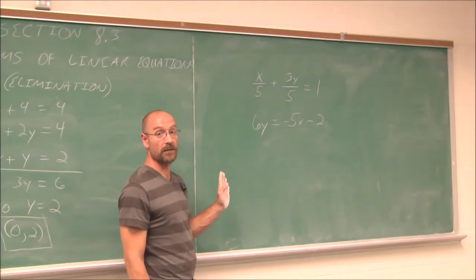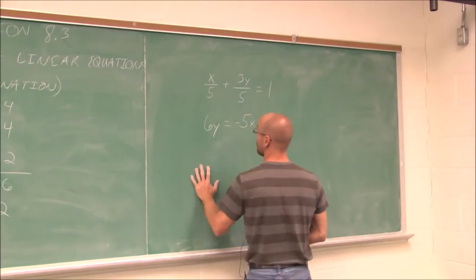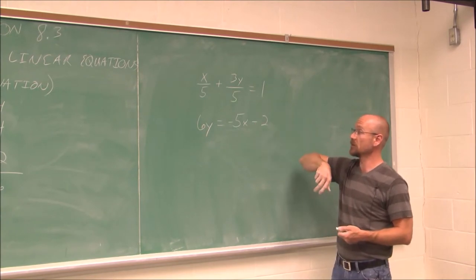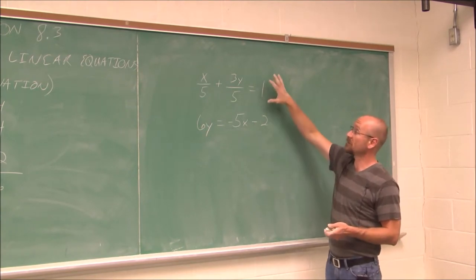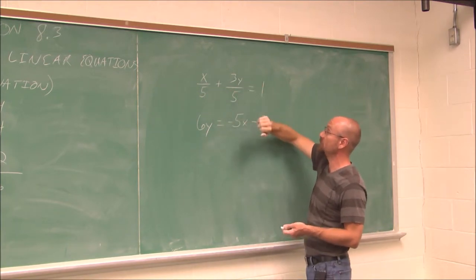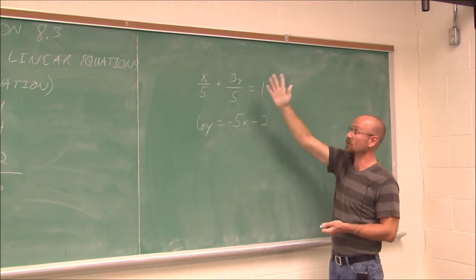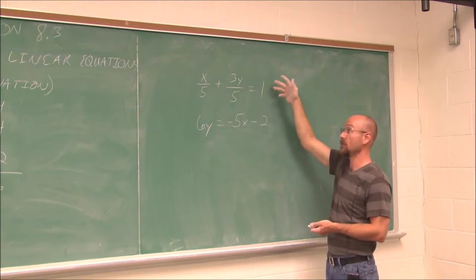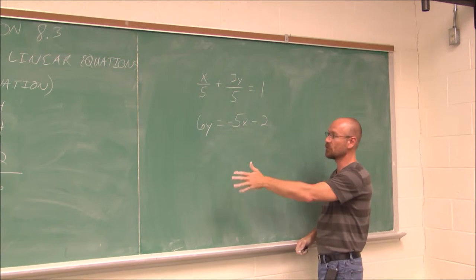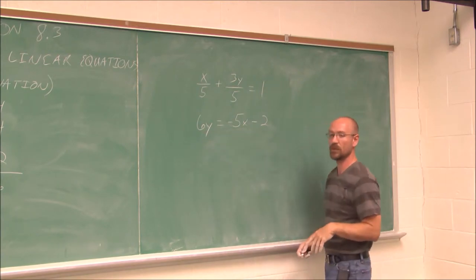And we'll see it's not going to be as nice as that previous example every time. Here we have two different equations of a line. One of them is kind of in general form, where a is 1/5, and b is 3/5, and c is 1. So x/5 plus 3y/5 equals 1.